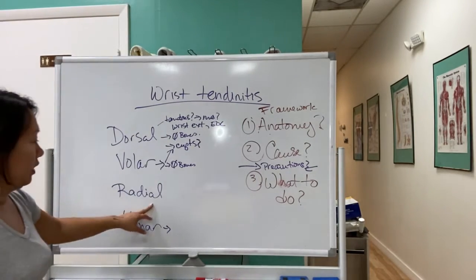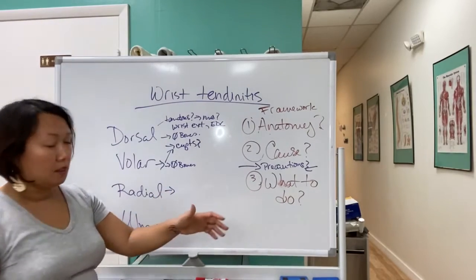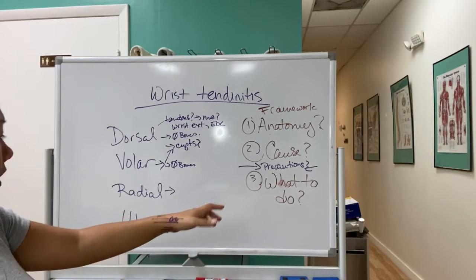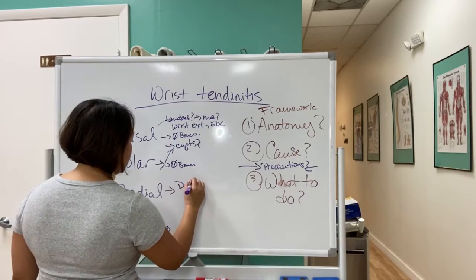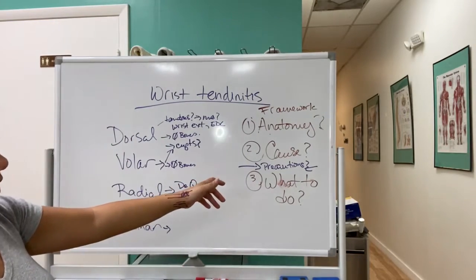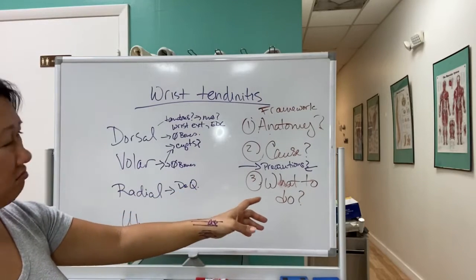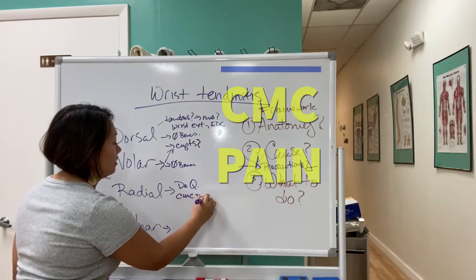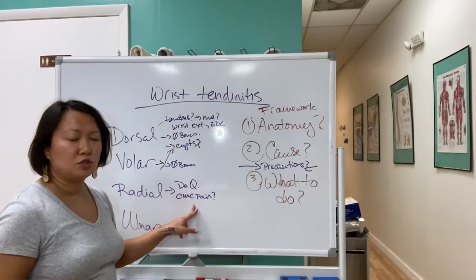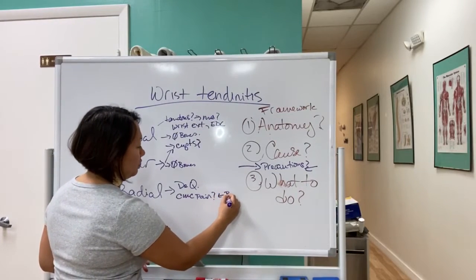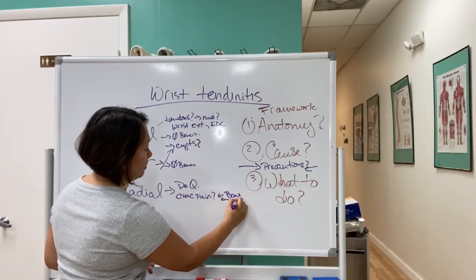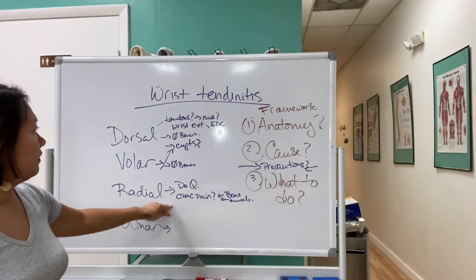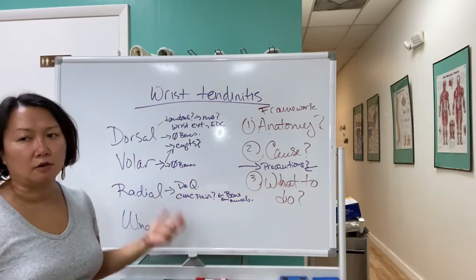On the radial side, what could be a tendonitis here? We have De Quervain's tendonitis potentially. There's also thumb CMC pain, but you can rule that out because that's a bone or muscle issue. If it's purely a tendon issue on the radial side, majority of the time it's a De Quervain's type of issue.